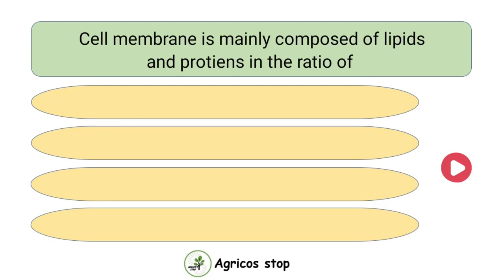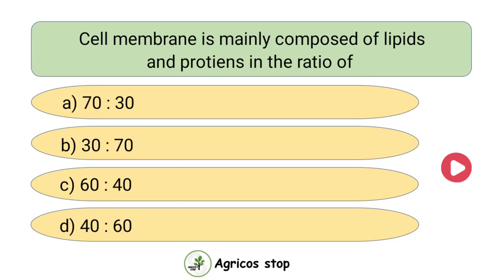Cell membrane is mainly composed of lipids and proteins in the ratio of? Options are 70:30, 30:70, 60:40, and 40:60. The answer is 60:40. Cell membrane is mainly composed of lipids and proteins in the ratio of 60:40.